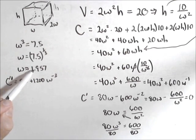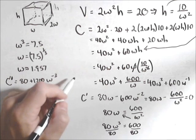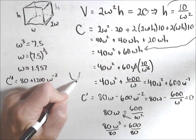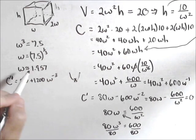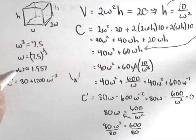So if I plug in 1.95, that's going to be positive. Which tells me it's concave up. Which tells me I have a minimum because it's got to sit at the bottom. So this value for w does minimize my cost.